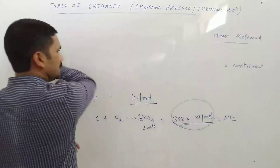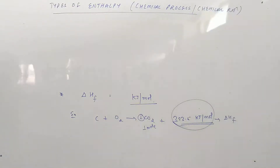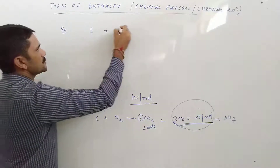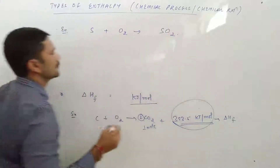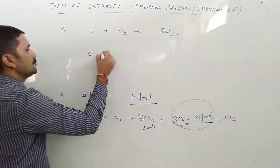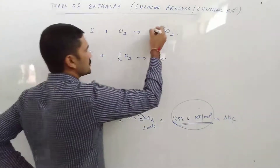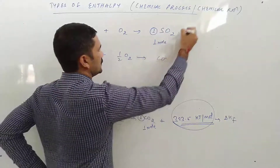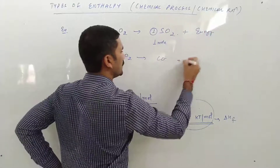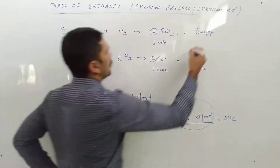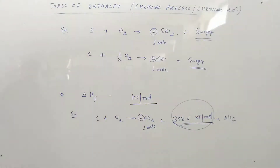Aur examples lete hain enthalpy of formation ke: S + O₂ → SO₂ aur C + ½O₂ → CO. Alag-alag substances hum bana rahe hain — kitna substance bana rahe hain? Ek mole bana rahe hain. Is time par jo energy release hogi ya absorb hogi, that is called enthalpy of formation.